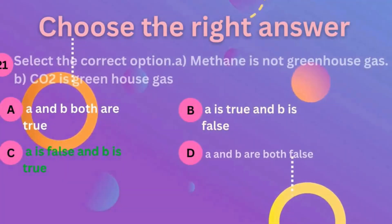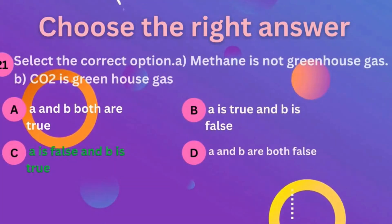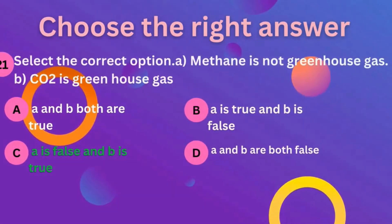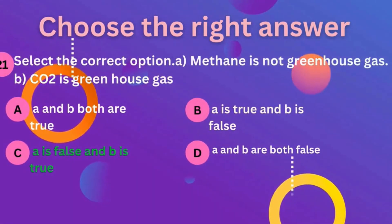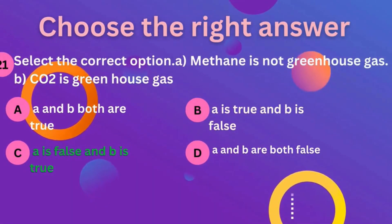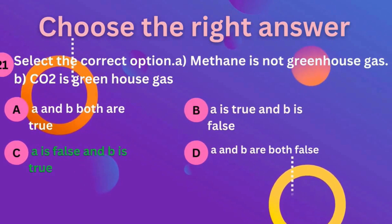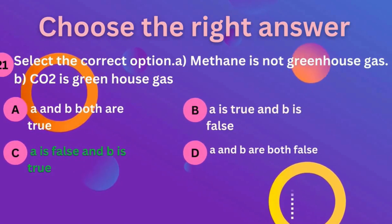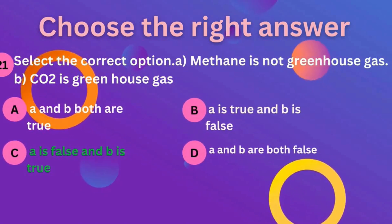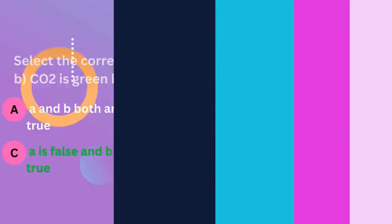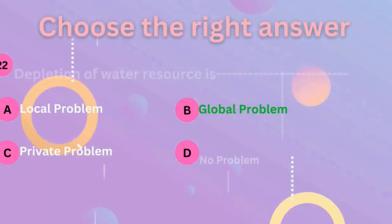Question 21: select the correct option. Here, A states methane is not a greenhouse gas, and B states CO2 is a greenhouse gas. The correct answer is C.